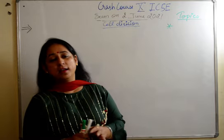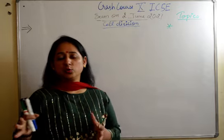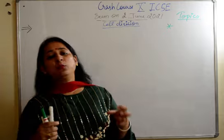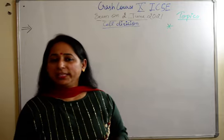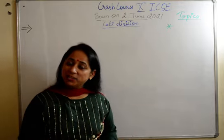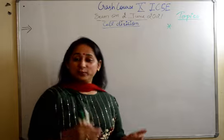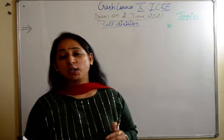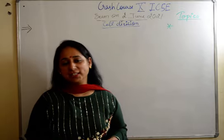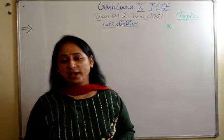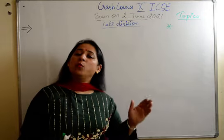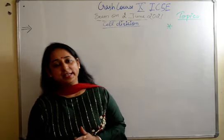I have divided this crash course into phases. I will take one chapter each. We have 8 chapters altogether — nervous system and sense organs is one chapter (Part A and B), so it's not 9 chapters, it's 8 chapters.